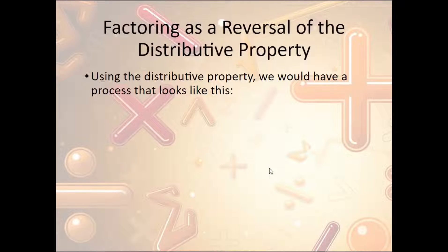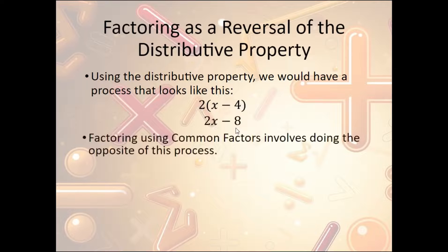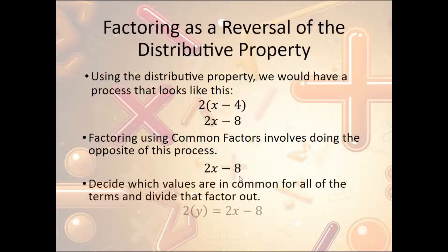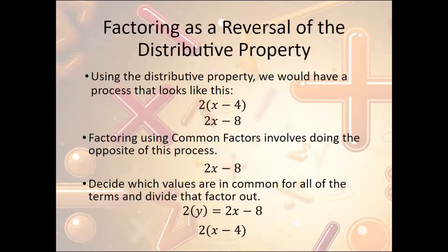Factoring is really just a reversal of the distributive property. For instance, with the distributive property we had 2 times (x minus 4), and when we distributed we got 2x minus 8. Now if we factor 2x minus 8, we look for something in common between the two terms. Both 2x and negative 8 are divisible by 2, so we pull that out and end up with 2 times (x minus 4) — exactly the same as where we started. Factoring in this way is exactly the opposite of the distributive property.